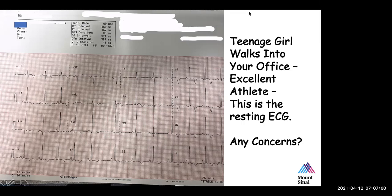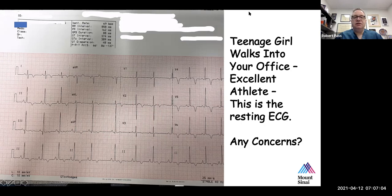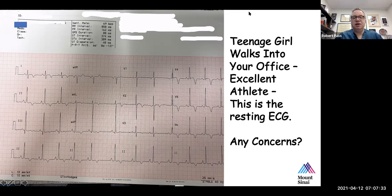T wave inversions, particularly in the lateral precordial leads in a teenager, are always abnormal. And the thing you should think about when you see an ECG like this is whether or not a patient might have hypertrophic cardiomyopathy — or any kind of cardiomyopathy, but particularly hypertrophic cardiomyopathy. The ECG can oftentimes be more sensitive for this diagnosis than even an echocardiogram. Sometimes the ECG will be abnormal, and then a year or two or three later the echo will start to be abnormal. What are you going to ask when you see a tracing like this?